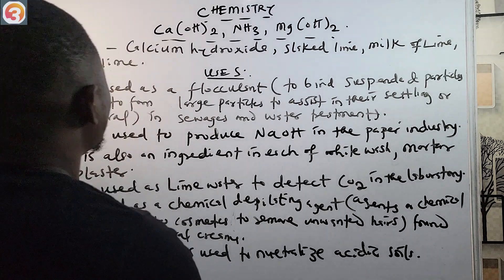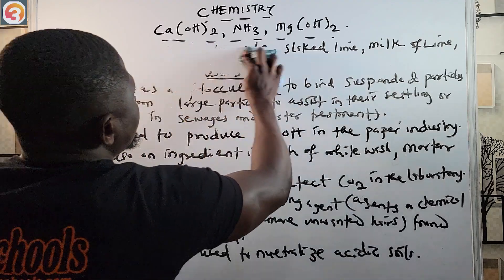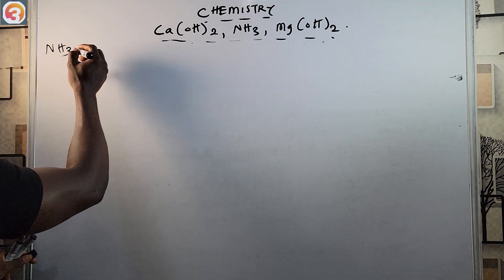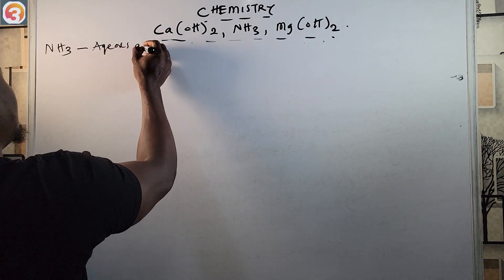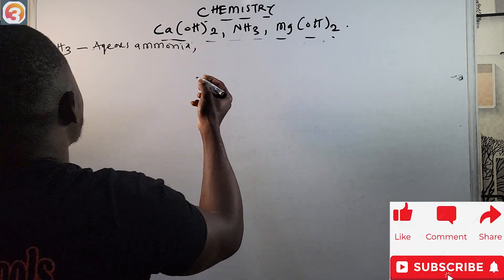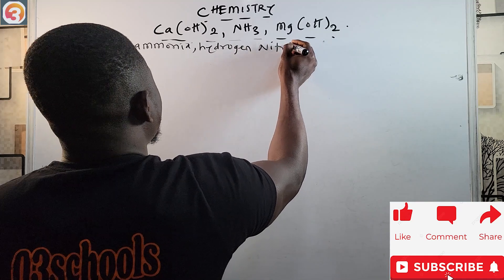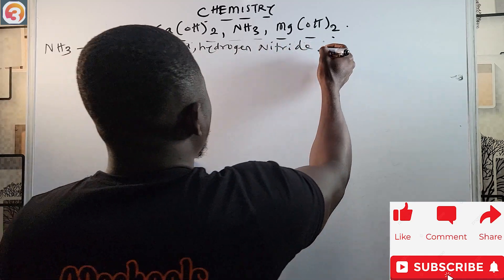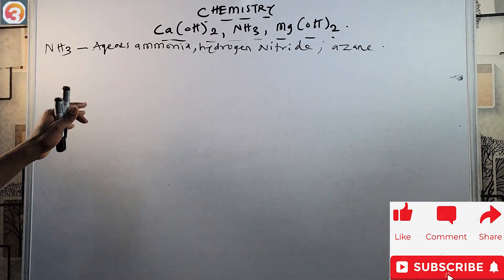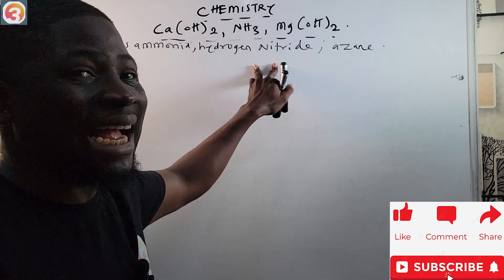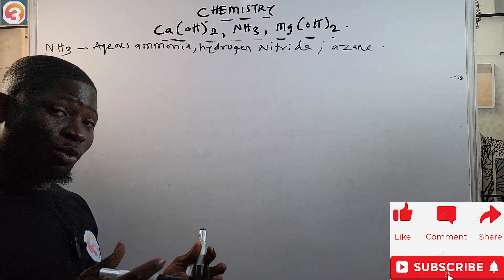Now we are going to look at the uses of ammonia, NH₃. Ammonia is also called aqueous ammonia, hydrogen nitride, or azine.